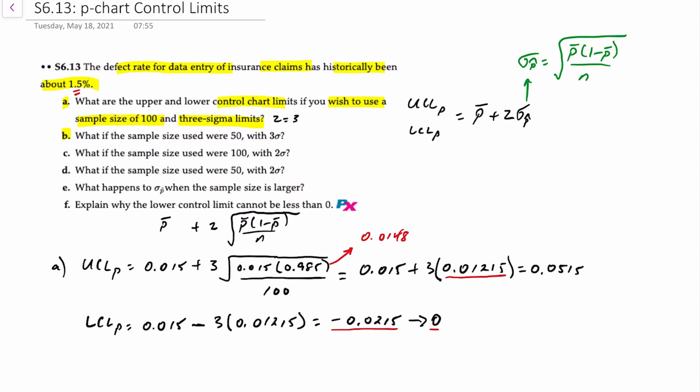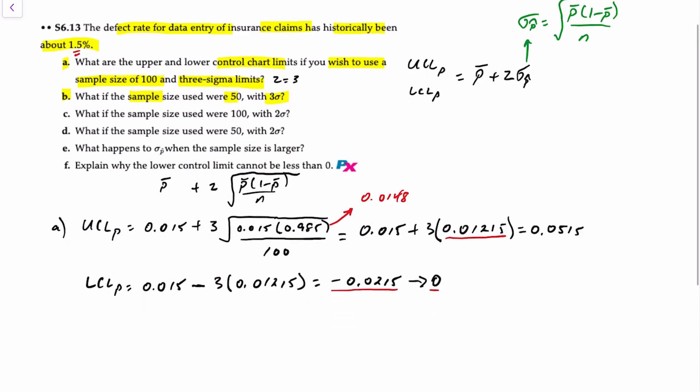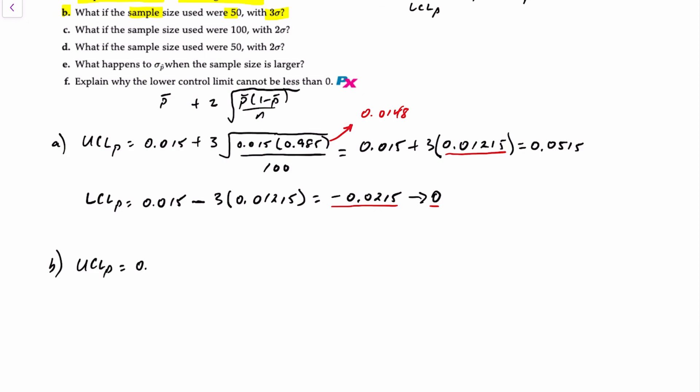Now for requirement B, what if the sample size is 50 and we're using 3 sigma? Our upper control limit is equal to 0.015 plus still 3 sigma, but now we're going to multiply this by 0.0148 in the numerator divided by 50. This will be 0.015 plus 3 times 0.0172, and that'll get you an upper control limit of 0.0666.